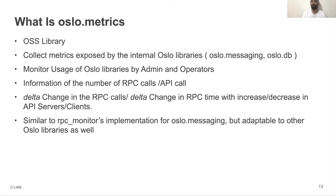Oslo Metrics can give us different information — for example, the number of RPC calls, RPC exceptions, or the amount of time taken for an RPC call. Similarly, how much time a database query takes and how many database queries are being hit — say in a VM creation or network creation. We can also use Oslo Metrics to find the difference in number of RPC calls and time taken as we scale up or down, or increase API requests or client-server interactions. Oslo Metrics took some inspiration from the RPC monitors implementation of Oslo Messaging, but RPC monitors are limited to Oslo Messaging, while Oslo Metrics can be used with different Oslo libraries.